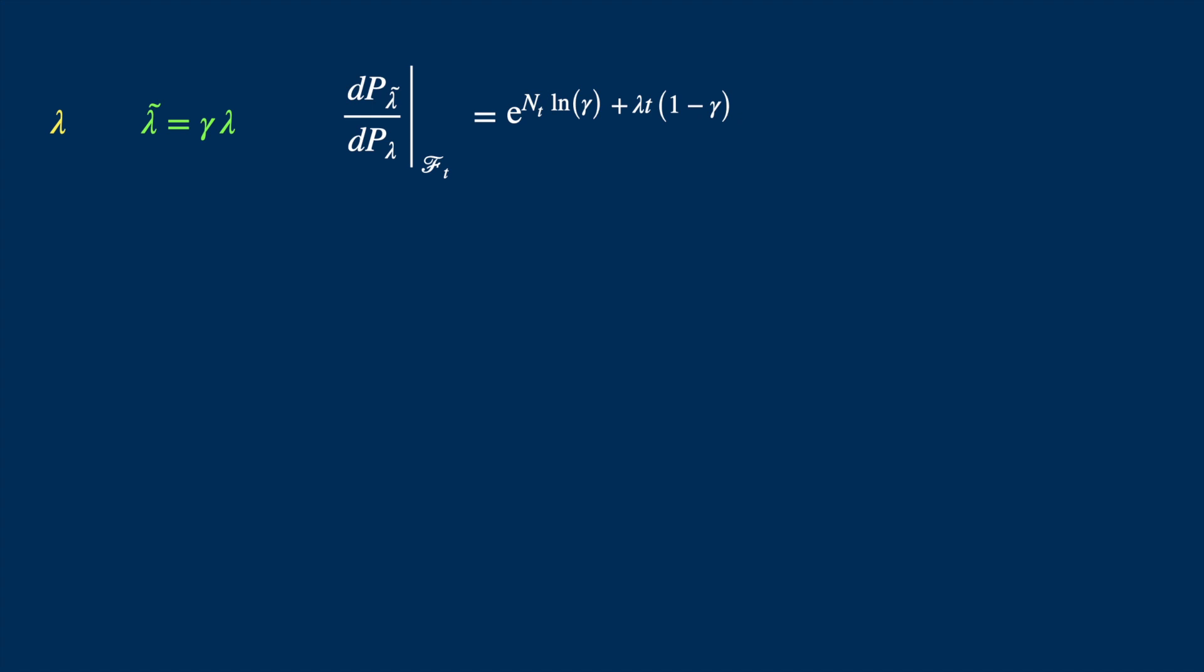Now you can see that t has to be finite, for if it could go to infinity, then the exponent could be minus infinity or plus infinity, which means the Radon-Nikodym derivative would be zero or infinity.